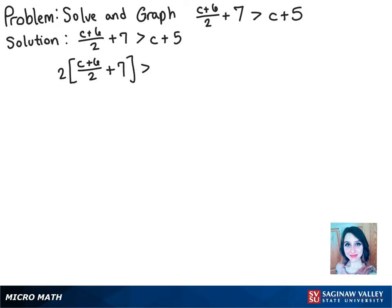And when we do that, distributing to the fraction here, we'll just cancel the 2, so the rest will be c plus 6. And then distributing to the 7, we'll get 14, so be careful there.